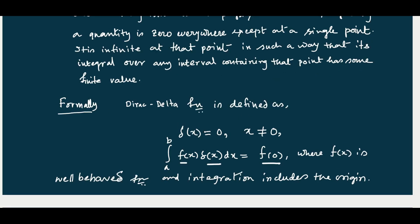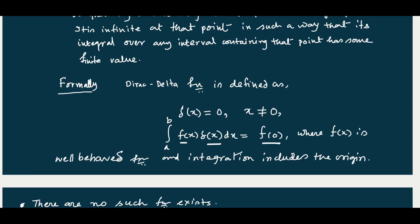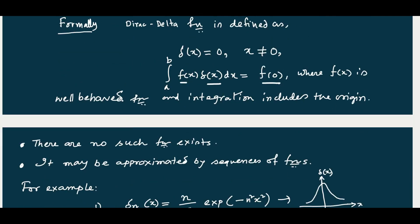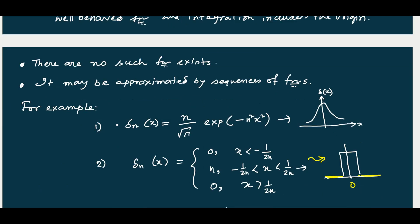And the integration from a to b of f(x) delta(x) dx equals f(0), where f(x) is a well-behaved or good function and the integration includes the origin. No such function really exists and it may be approximated by a sequence of functions. It was first introduced by the physicist Paul Dirac.